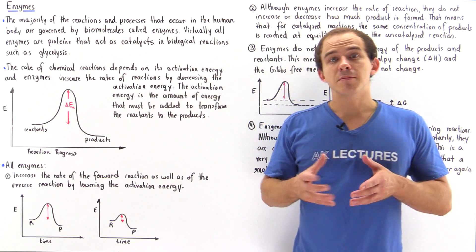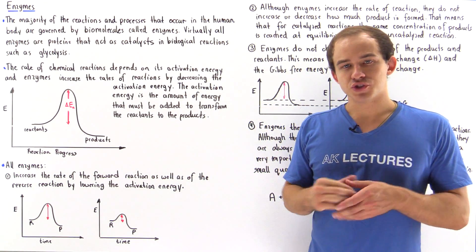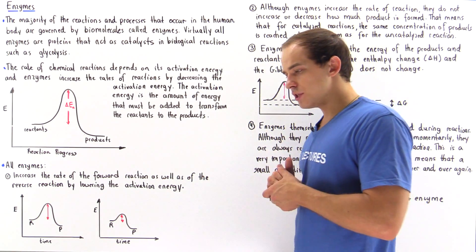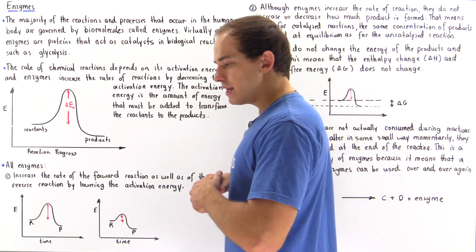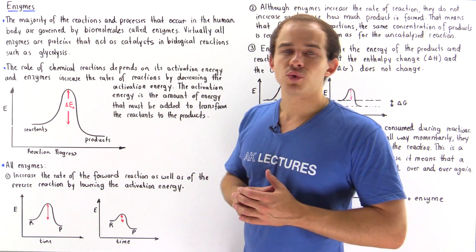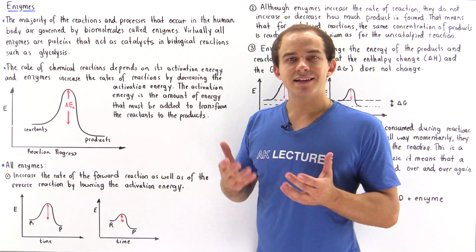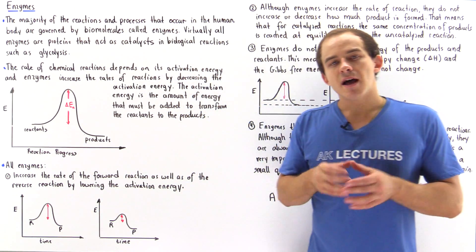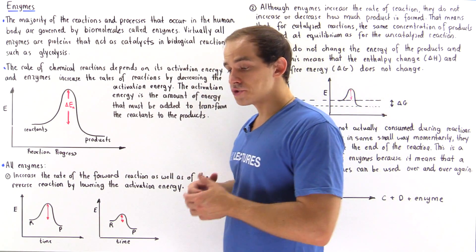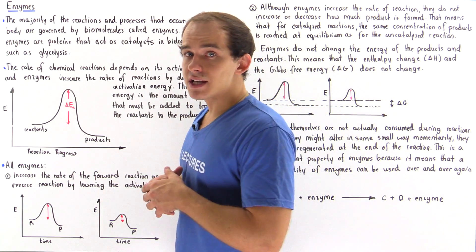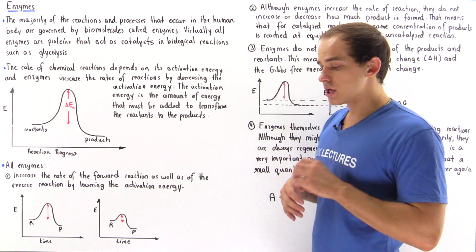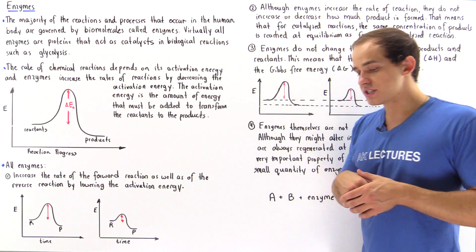The majority of the chemical reactions and biological processes that take place within the human body are governed by a class of biomolecules known as enzymes. Now virtually all enzymes are proteins. Some enzymes are in fact RNA molecules and we'll discuss those separately.